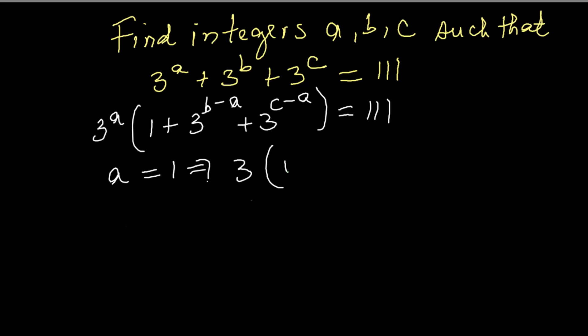Substitute A equals 1 back into the equation. We get 3 multiplied by open parentheses 1 plus 3 raised to the power B minus 1 plus 3 raised to the power C minus 1, close parentheses, equals 111.